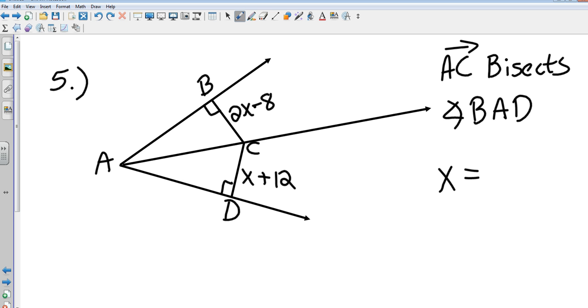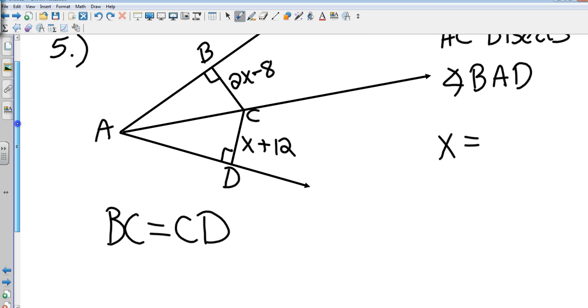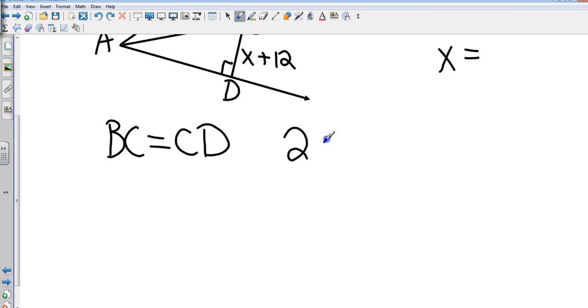So BC is congruent to CD, which means 2x minus 8 equals x plus 12. Subtract x from both sides, add 8 to both sides. What does x equal? 20.